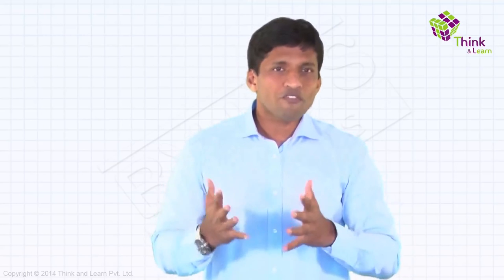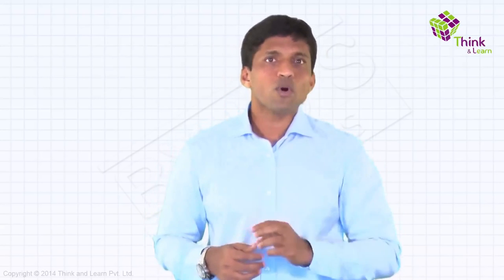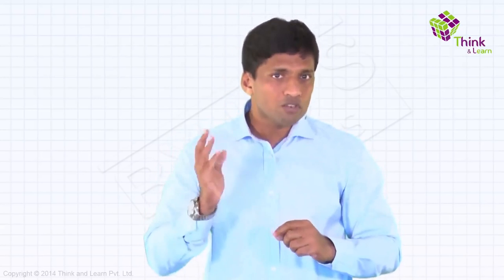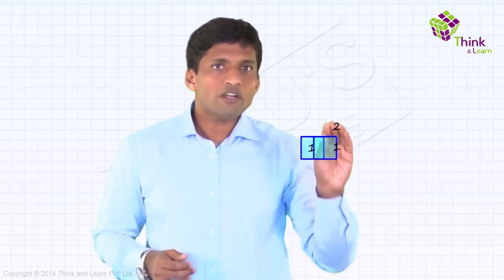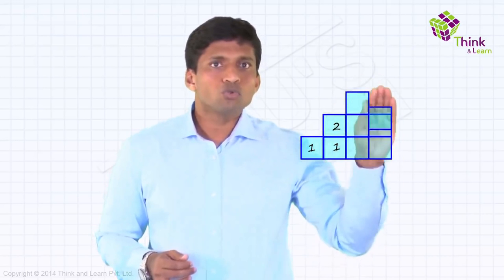Now, same 1, 2, 3, 4 itself can be visualized in so many ways. Let me make it a bit more interesting. So using squares, how can you visualize 1, 2, 3, 4? There are many ways. Let me show you one basic thing here. So 1, then 1, 2, then 1, 2, 3, then 1, 2, 3, 4.